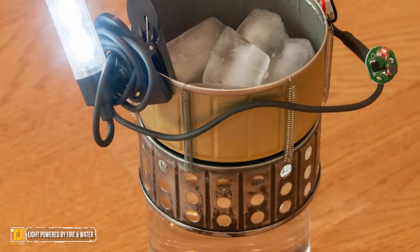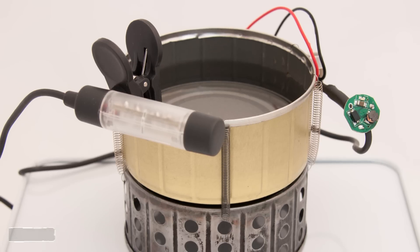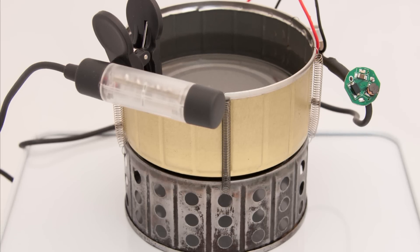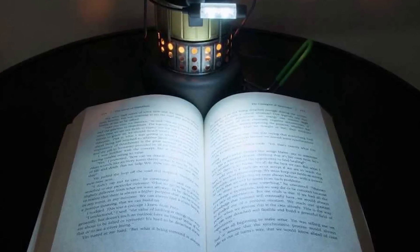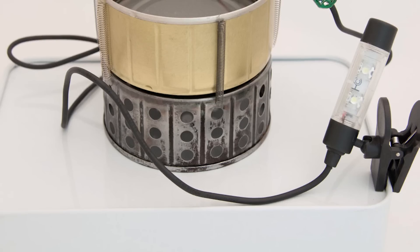Number 5: Light Powered by Fire and Water. A Peltier element, also known as a thermoelectric module, uses a temperature difference between a hot and cold side to generate electricity by applying the Seebeck effect.